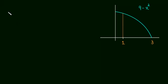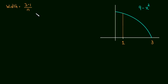First things first, let's determine the width of the rectangles we're going to use. The width is just the total length of the interval — in this case 3 minus 1, a length of 2 — divided by the number of rectangles. We're going to take a limit as the number of rectangles approaches infinity, so we'll call that n for now, giving us 2 over n as the width of each rectangle.